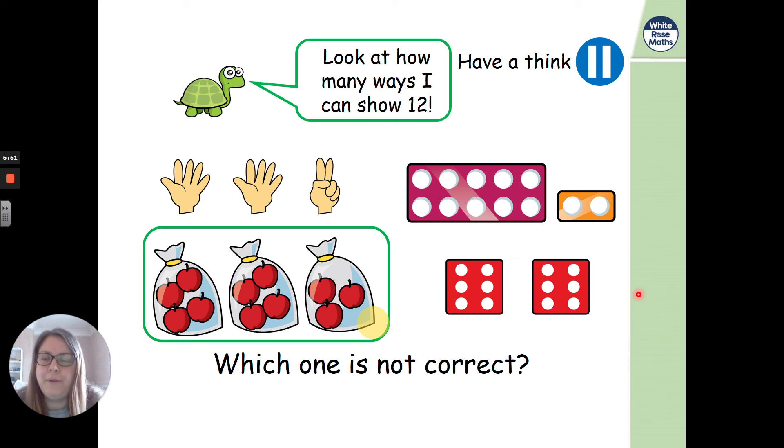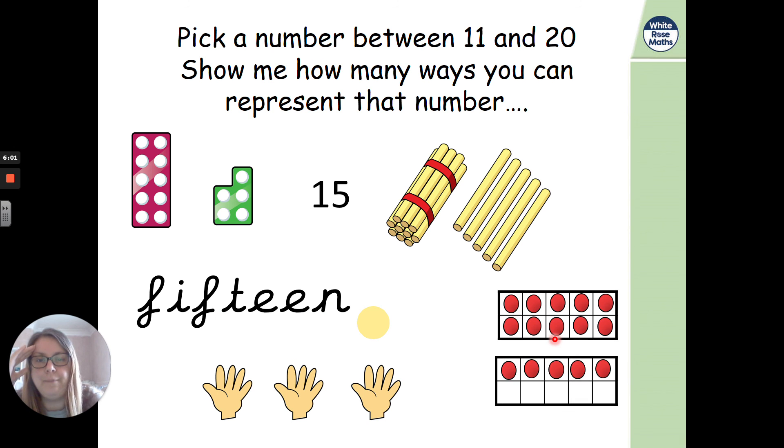It is the apples, isn't it? He'd only put 4 in there. 4 in there. So that 4 and 4 is 8, 9, 10, 11. He'd only drawn 11 apples, silly tiny.